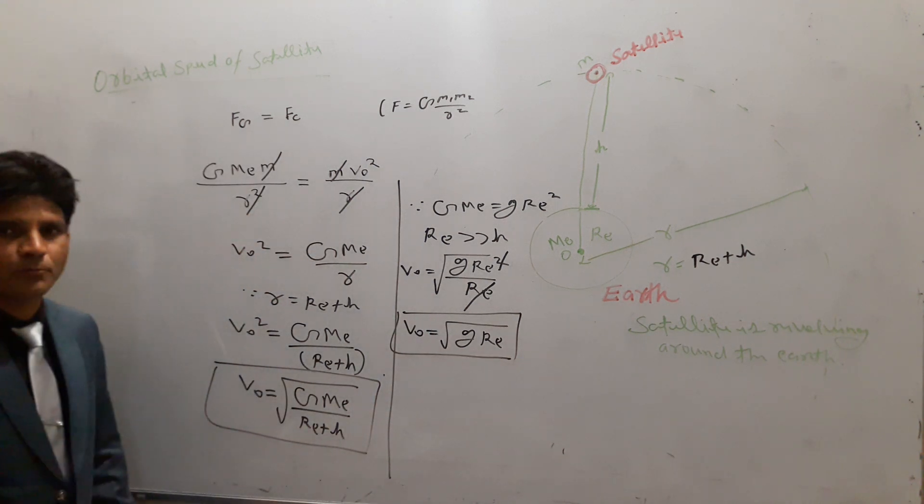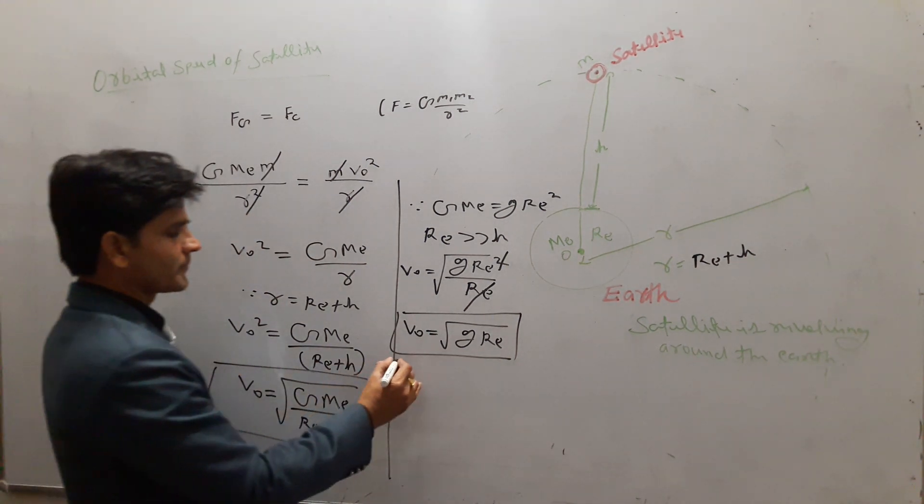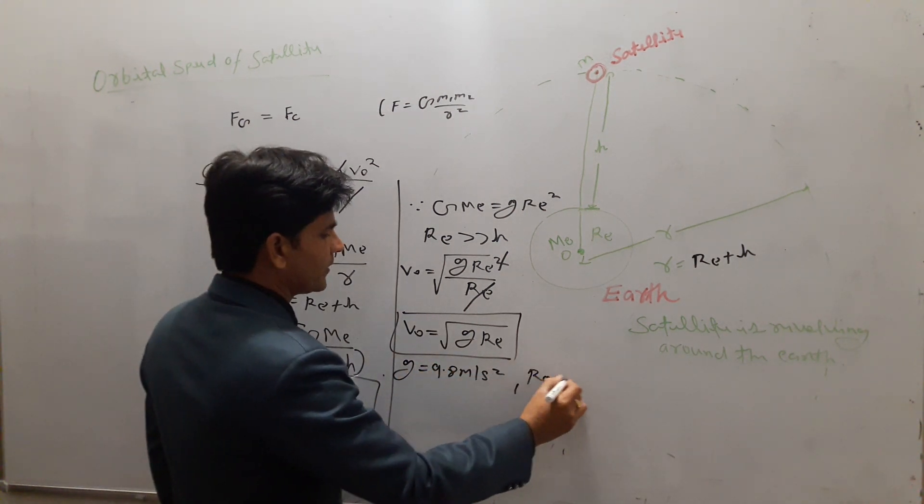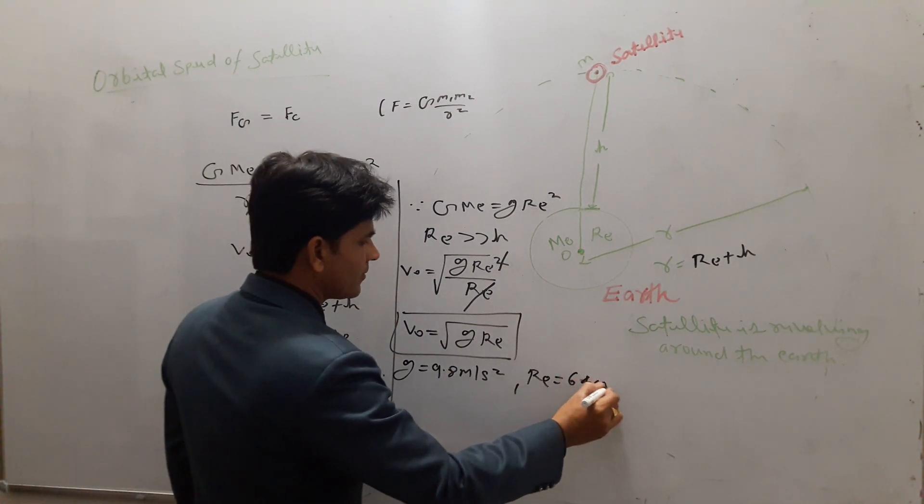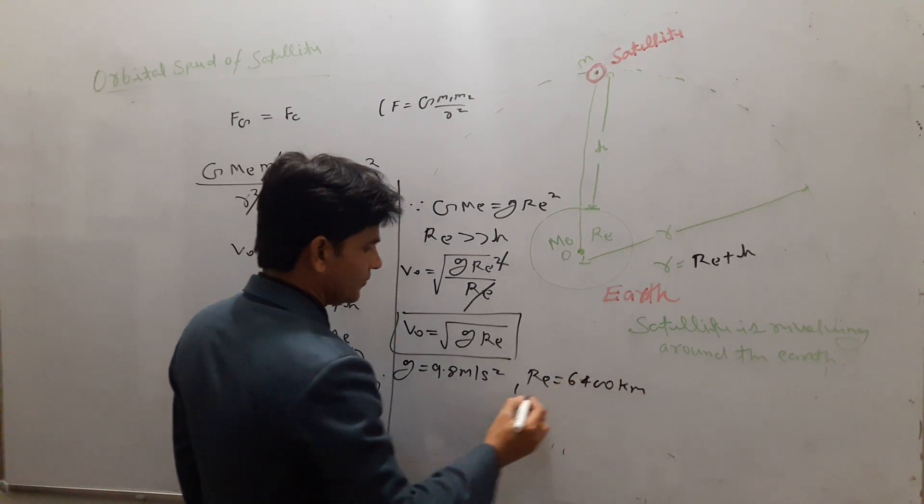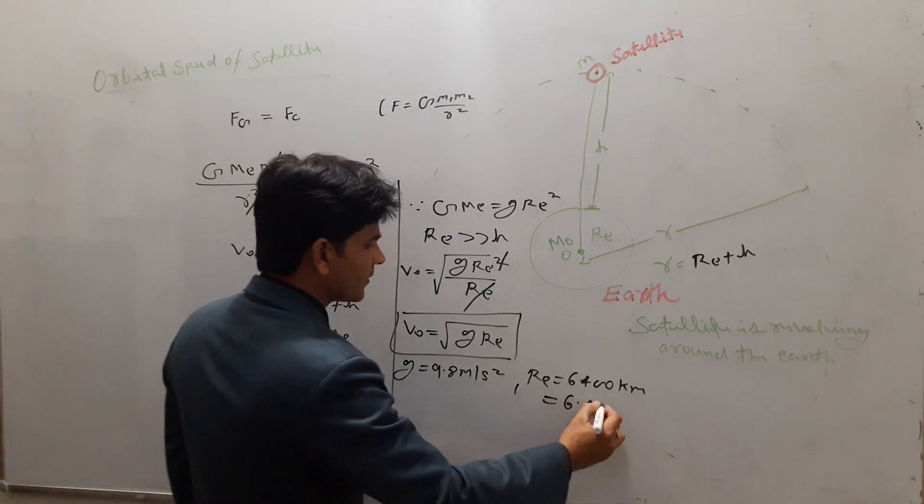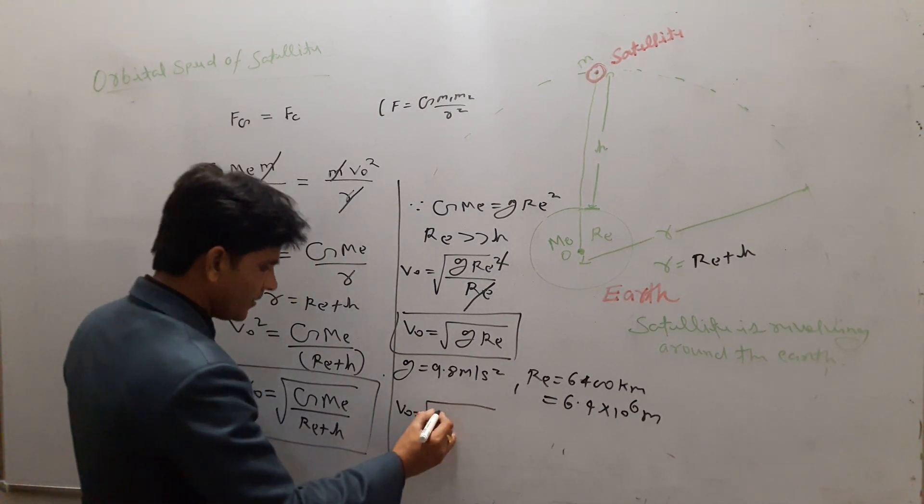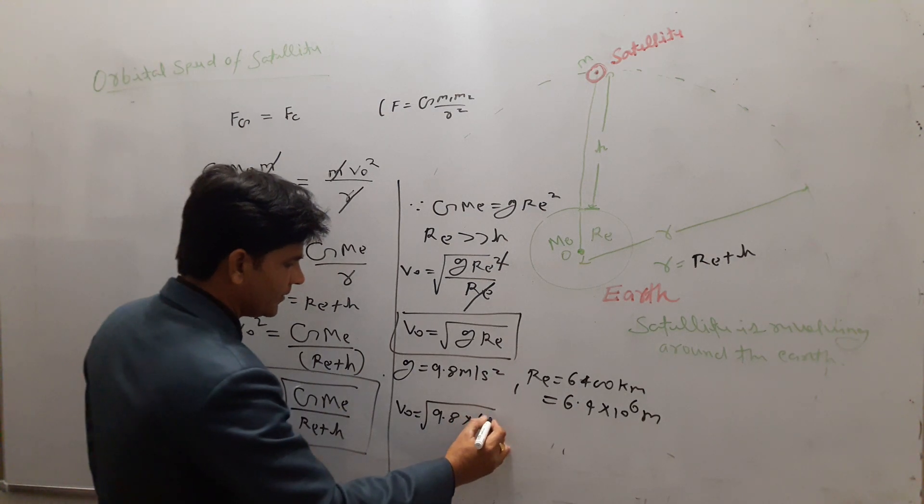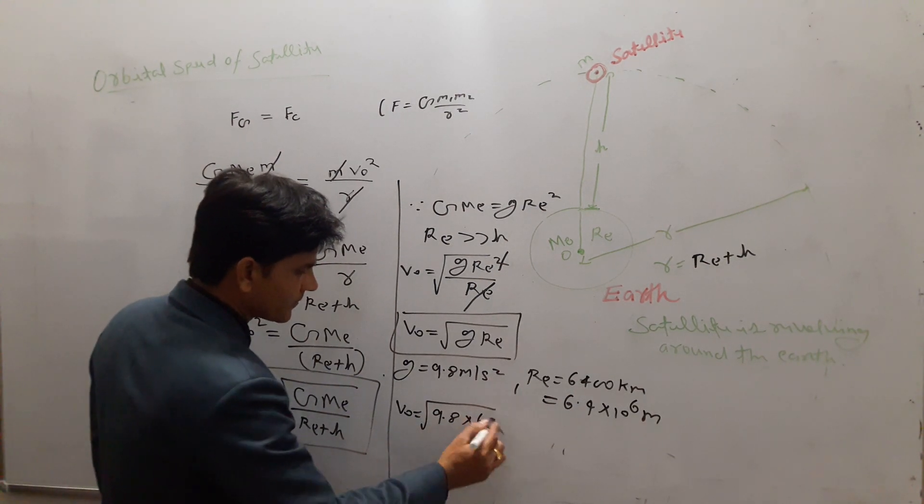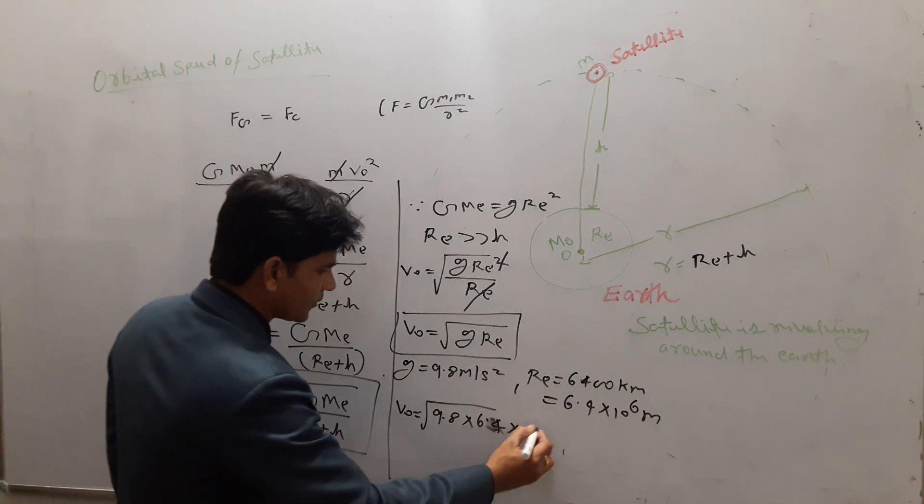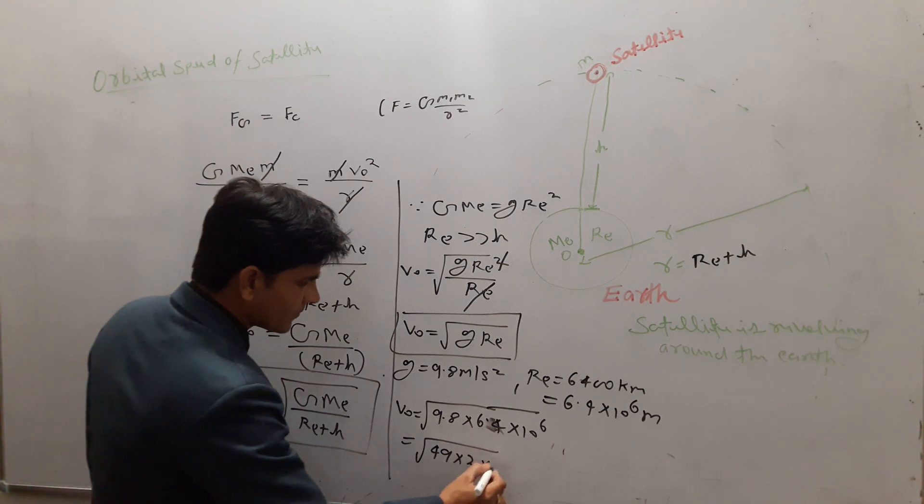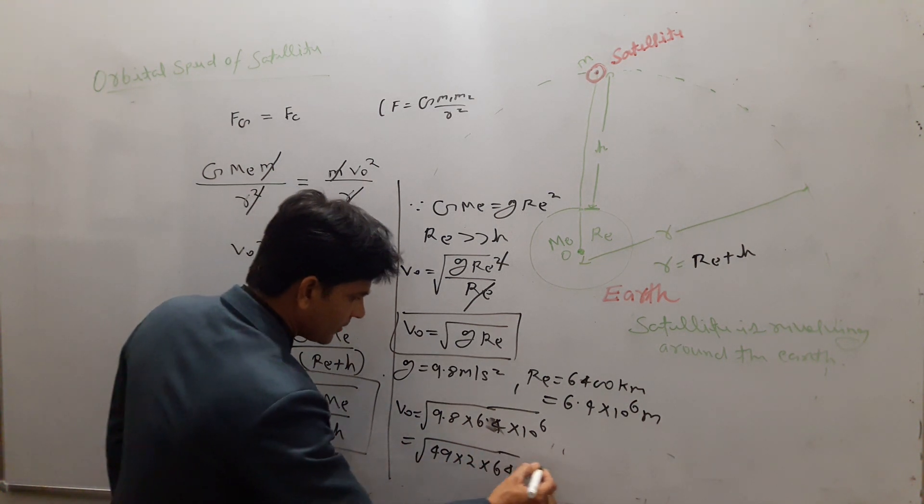Because g is 9.8 m per second squared, and the radius of Earth is 6400 km, that is 6.4 × 10^6 meter. By putting these values, 9.8 × 6.4 × 10^6. This can be written as 49 × 2 × 64 × 10^4. On solving, 7 × 8 × √2 × 10².